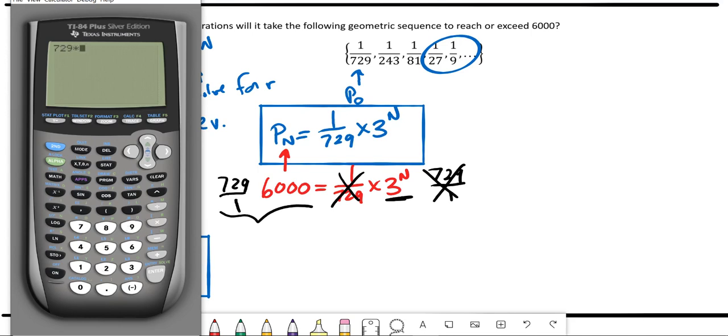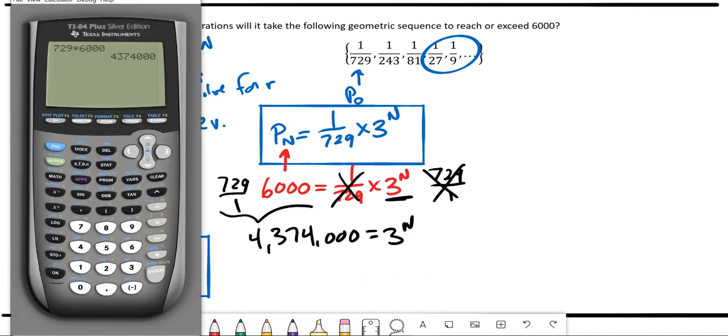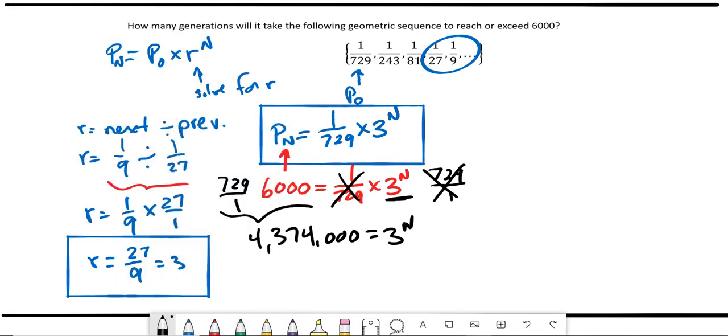729 times 6,000. And we get 4,374,000 equals 3 to the n. So I want to check that I copied that right. So now our exponent is where our variable lies, and to get that out, we need to use logarithms.